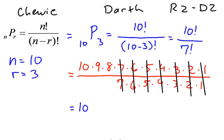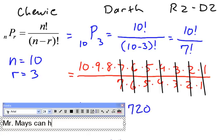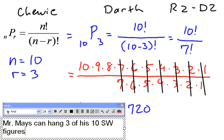And we should know, let's see, let's do it like this. Nine times eight is seventy-two, and seventy-two times ten is seven hundred twenty. So now, if I wanted to answer this question, I could, let's type it in there, make it look a little bit nicer. And we could say, Mr. Maze can hang three of his ten Star Wars figures in seven hundred twenty different ways. Period.